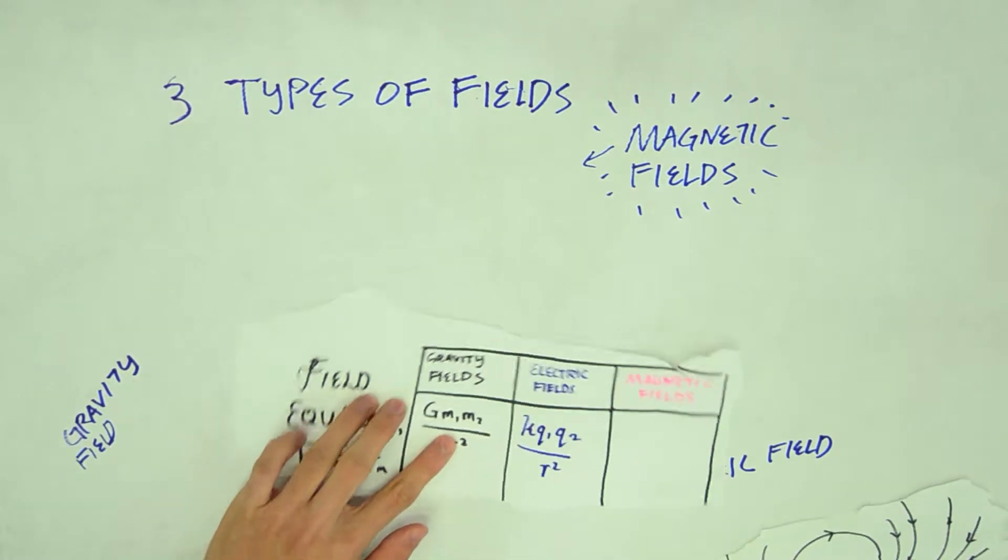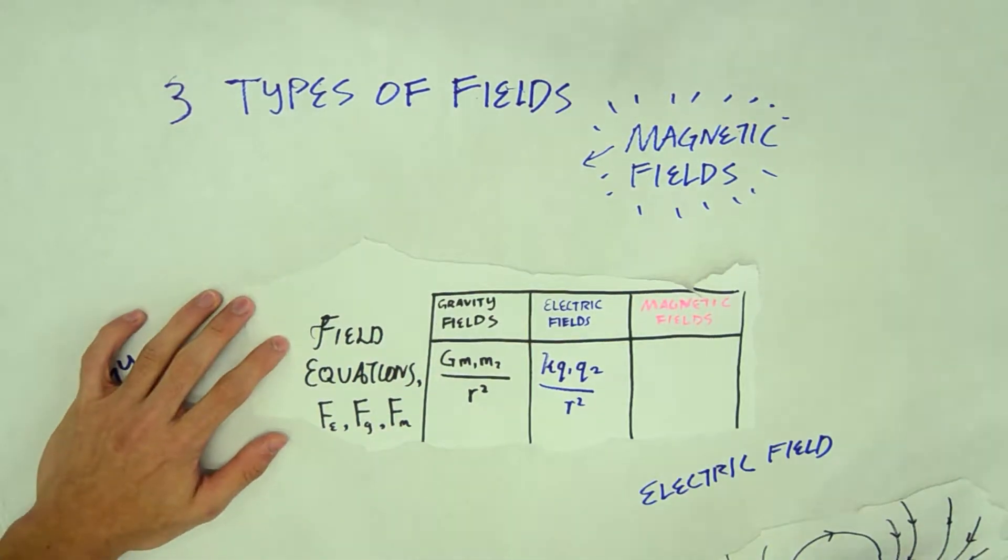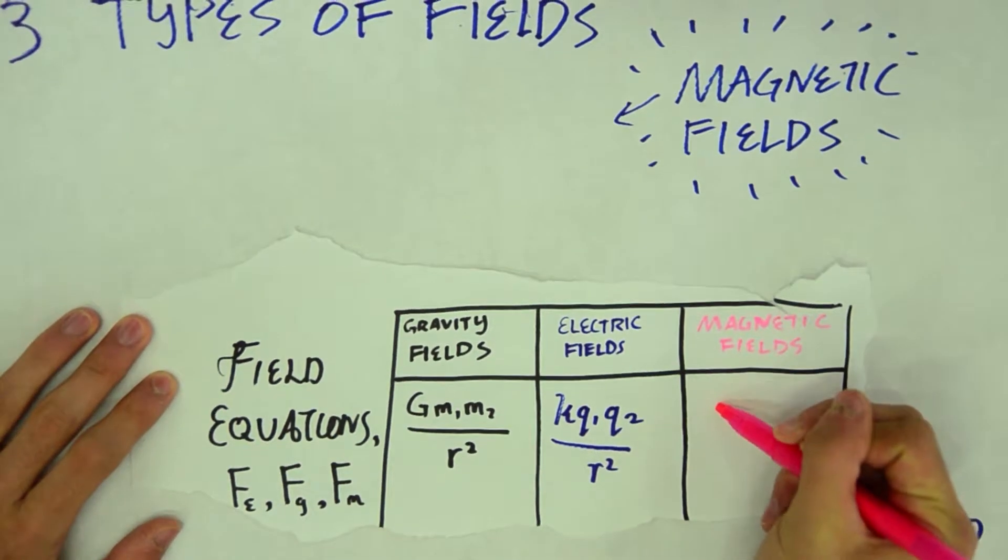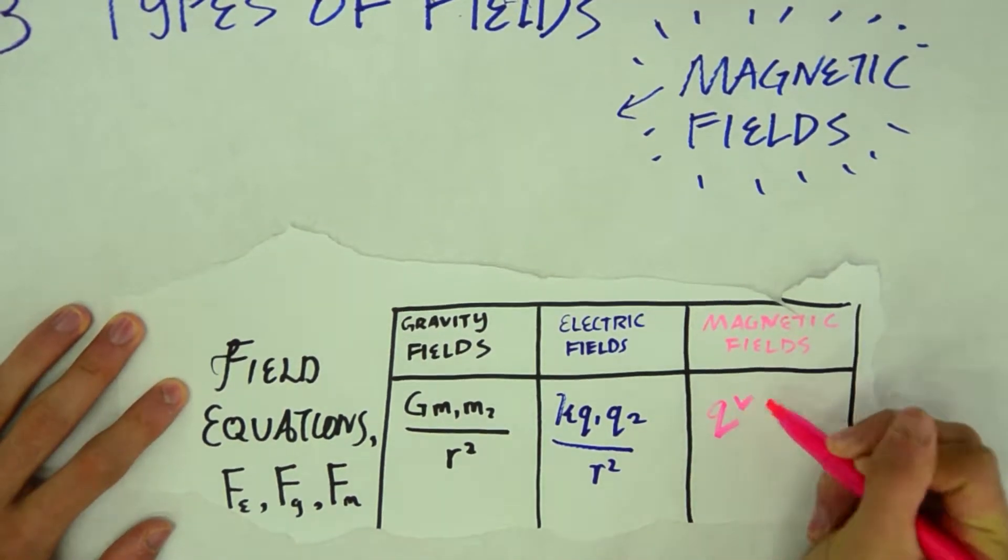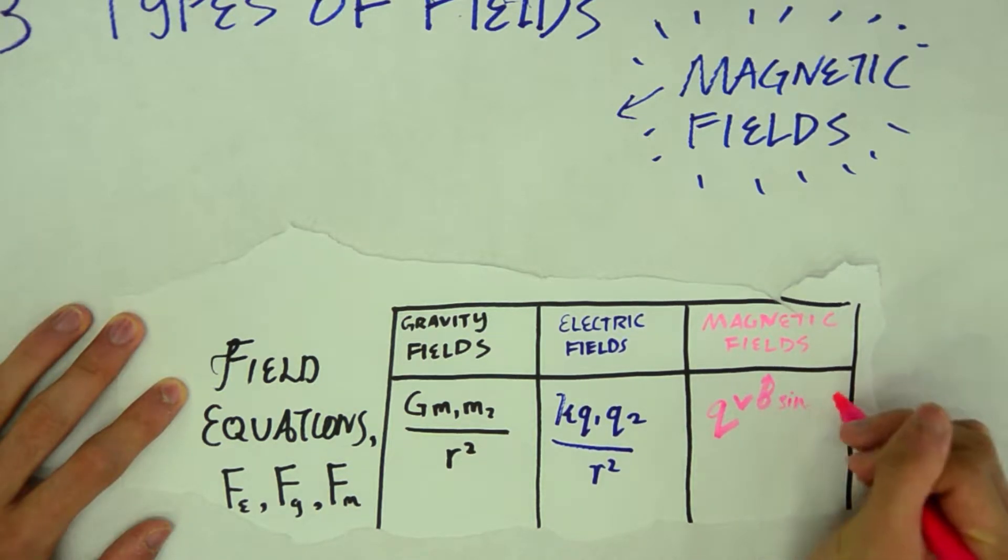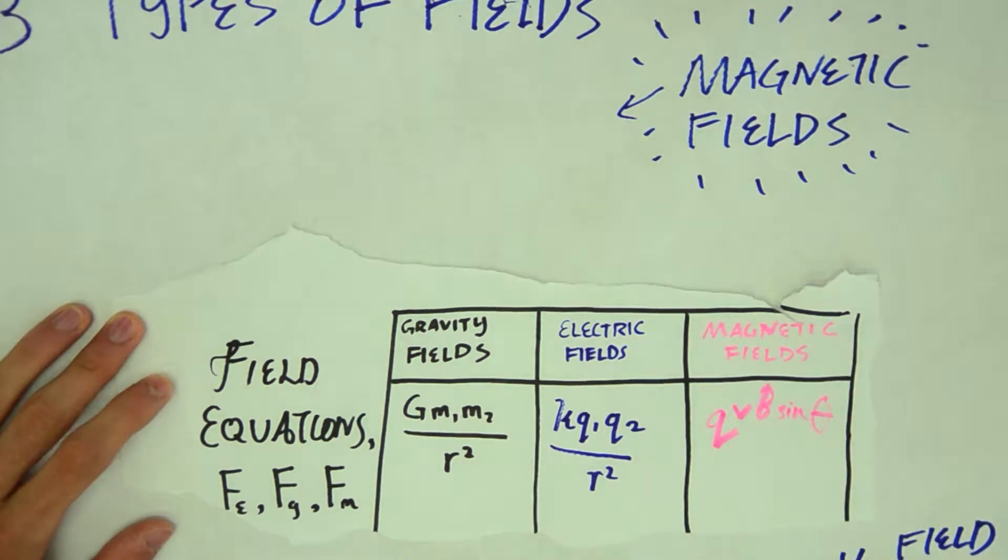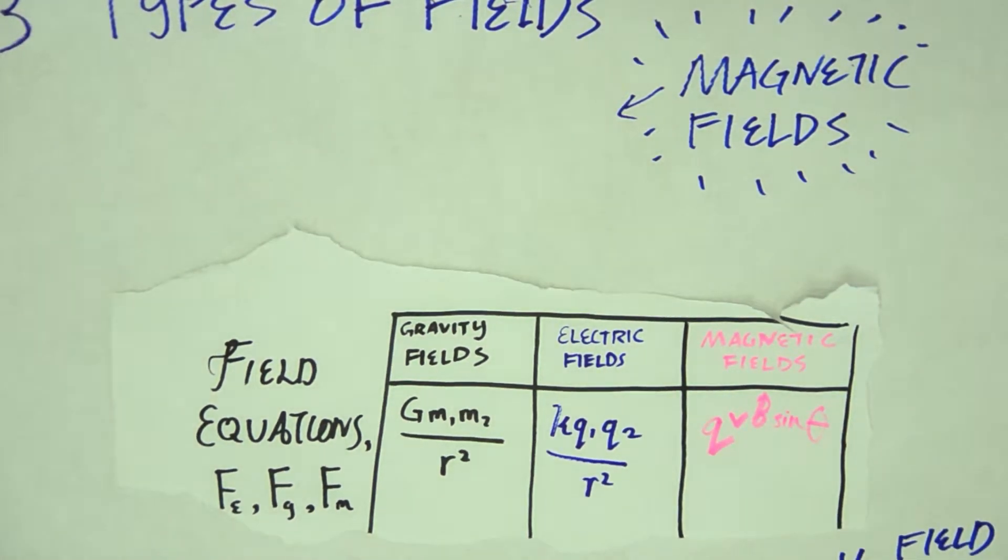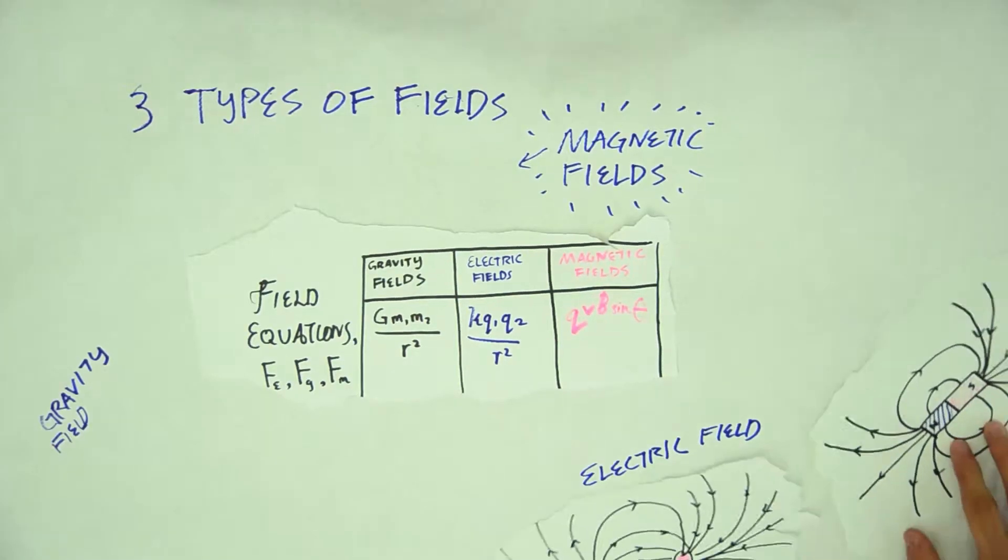Pulling up a table of field equations, as you can see, the equations for gravity and electric fields have been inserted prior to this. The magnetic field equation is equal to the charge Q multiplied by the velocity of charge V and again with B, which is the strength of the magnetic field, multiplied by sin theta. And this is the angle between the velocity and the strength of the magnetic field.